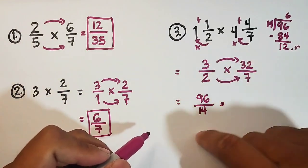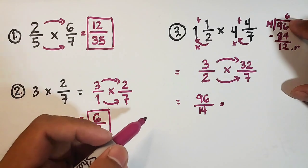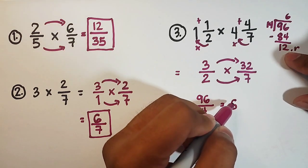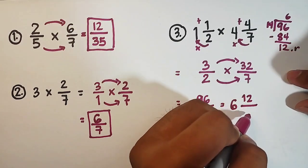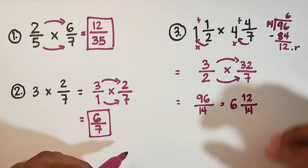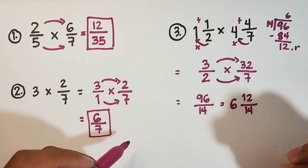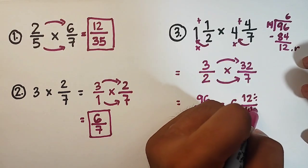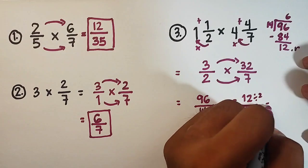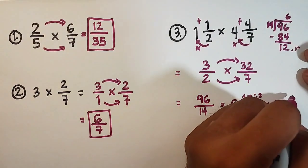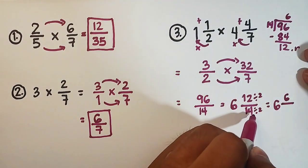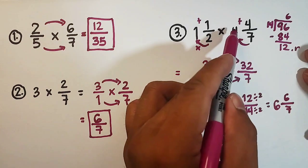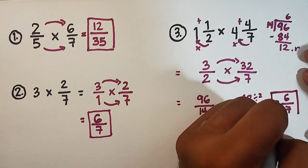Meaning, the converted or the mixed number of this 96 over 14 is, copy your quotient, which will serve as your whole number, 6. And then your remainder will serve as the new numerator. We have 12. And then your divisor will serve as your denominator. And as you can see, we have 6 and 12 over 14. Now guys, it's not yet done. This 12 over 14 can be simplified by dividing both sides by 2. So this is divided by 2, divided by 2, copy your denominator, 6. Then 12 divided by 2 is 6, over 14 divided by 2, which is equal to 7. Meaning, the answer or the product, when we multiply 1 and 1 half by 4 and 4 over 7, that is equal to 6 and 6 over 7.